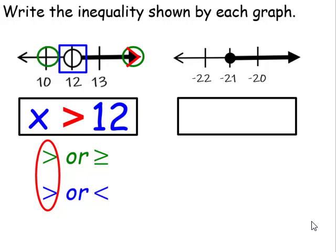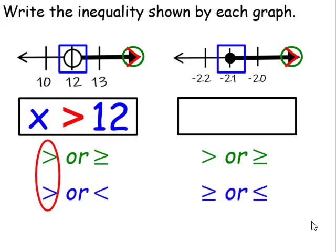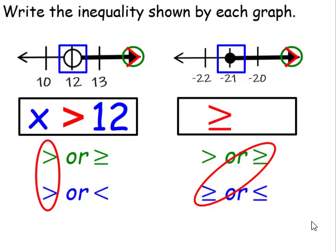Let's take a look at the next one. Again, the arrow is facing in the right direction, so we know it's going to either be greater than or greater than or equal to. Our circle now is a closed circle, therefore it's going to be either greater than or equal to or less than or equal to. Our inequality symbol is going to be greater than or equal to. I'm using x and the closed circle is located at negative 21.